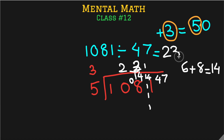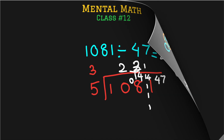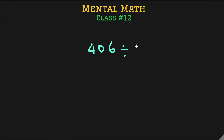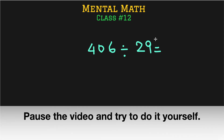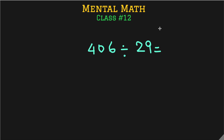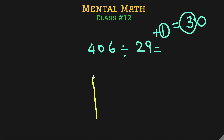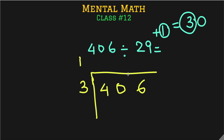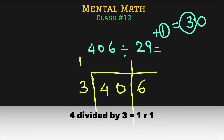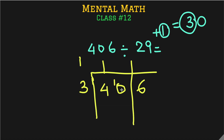One last question: 406 divided by 29. Pause the video and try it yourself. For the solution: we add 1 to 29 to make it 30, so the new divisor is 3 and the multiplier is 1. We set up 406 divided by 3 with multiplier 1 and the remainder area. Starting: 4 divided by 3 is 1 with remainder 1, which goes into the next position making 10.